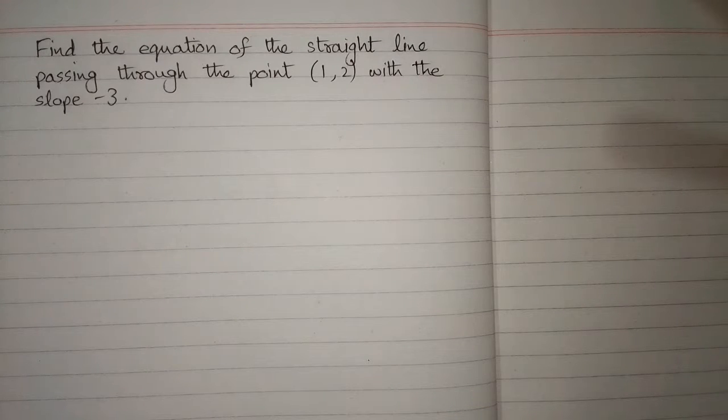In this video we will find the equation of the straight line passing through the point 1 comma 2 with the slope minus 3.